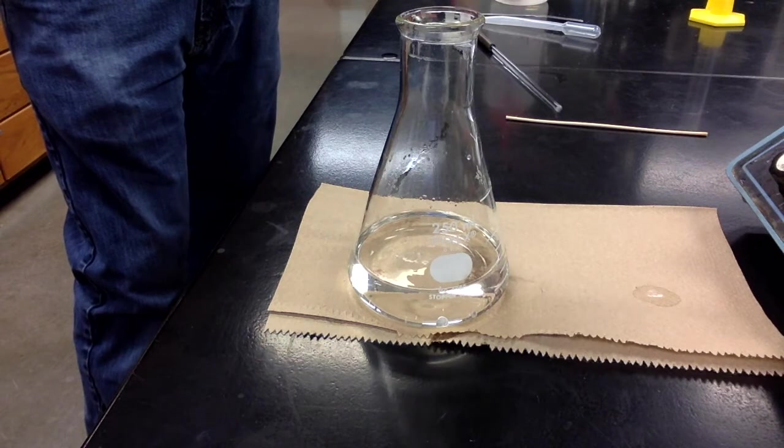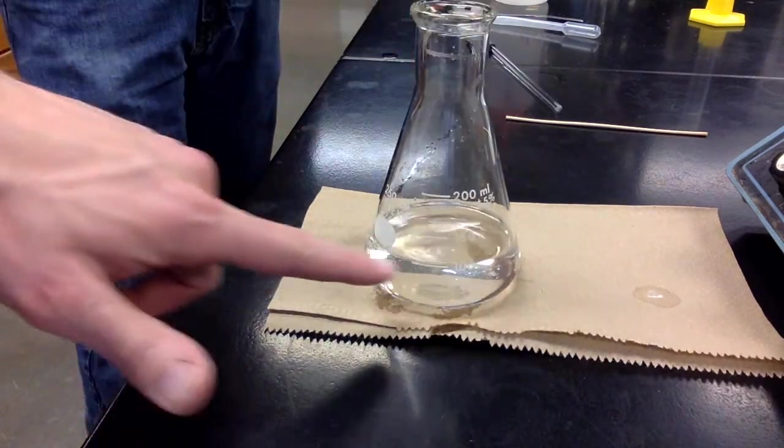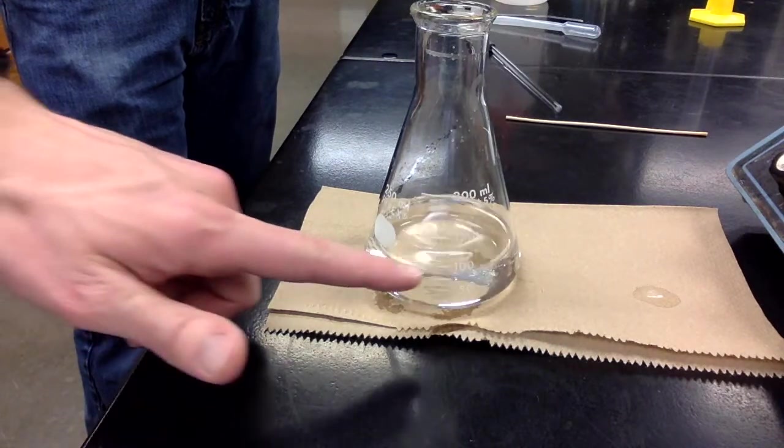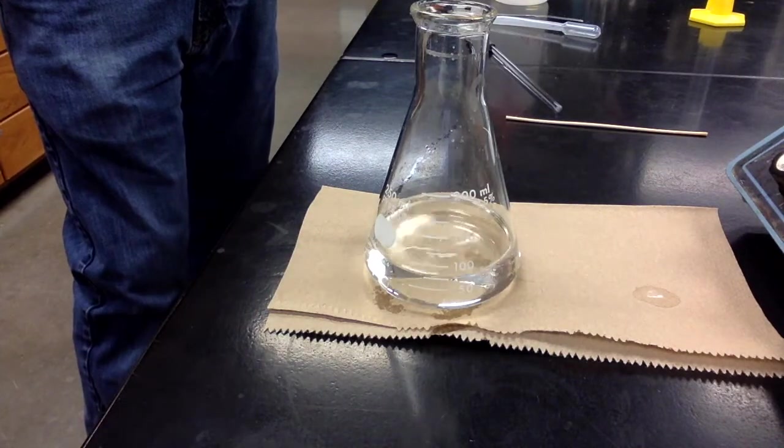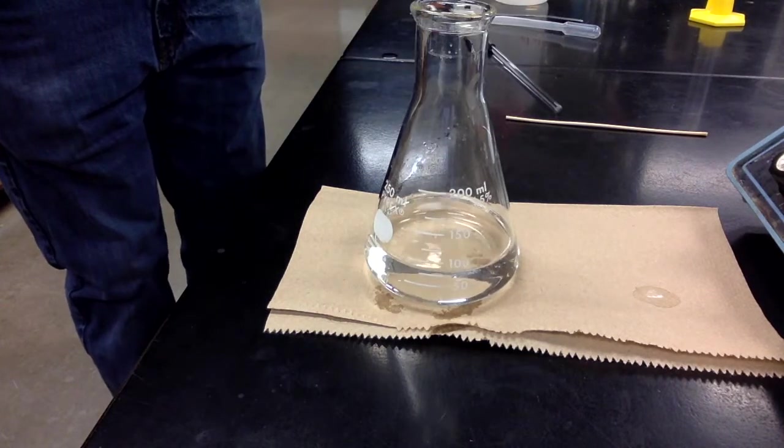All right, we've added, this is a very rough estimate of how much, but around a hundred mills of cyclohexane, and you can see after it boiled, it is now fully in solution.